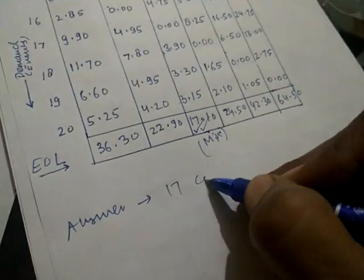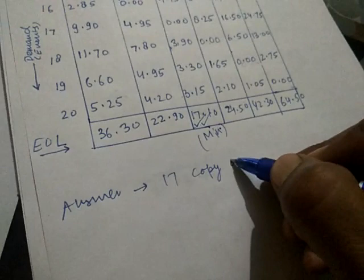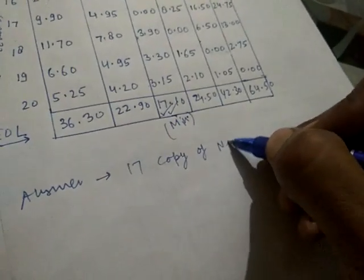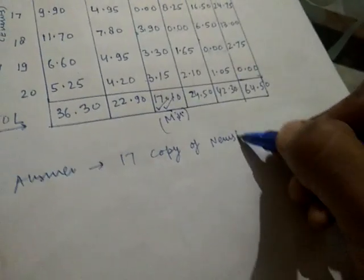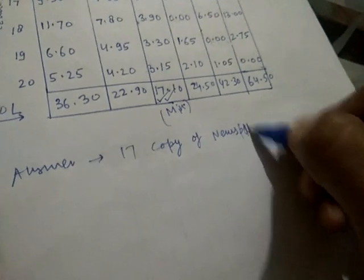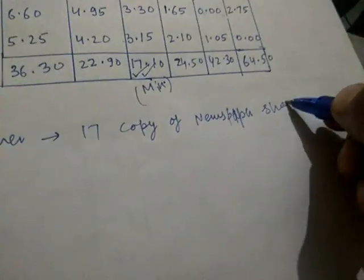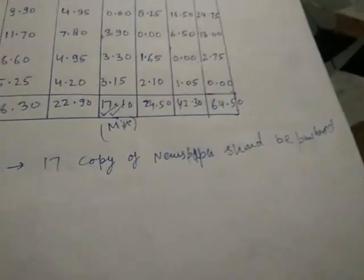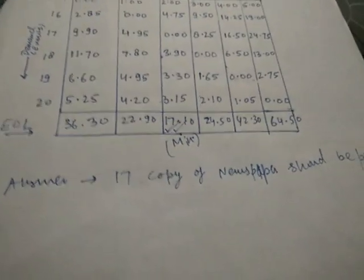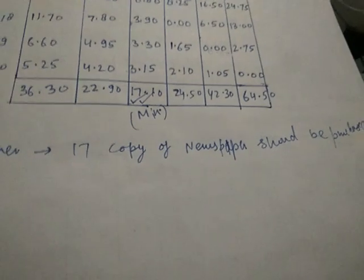So the answer is: 17 copies of newspaper should be purchased. If you remember, in the case of EMV the same answer was obtained, and in the case of EOL the same answer is obtained again.